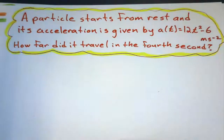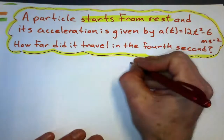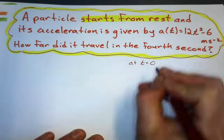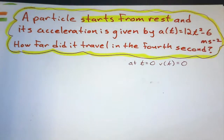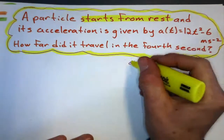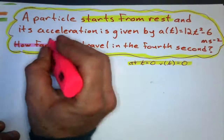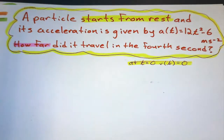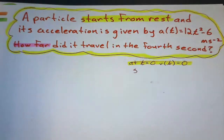First up, 'starts from rest' tells us something — at t equals zero, velocity equals zero. That's going to come in handy when we find the velocity function. Also, 'how far' has to do with distance, so 'how far' is going to be something to do with displacement — so how far is going to be s something.